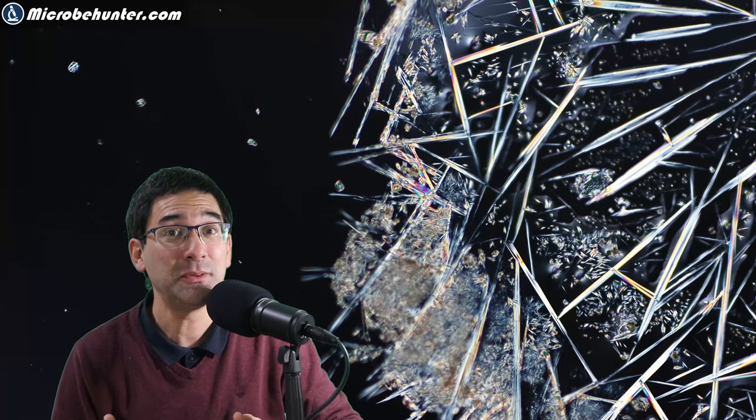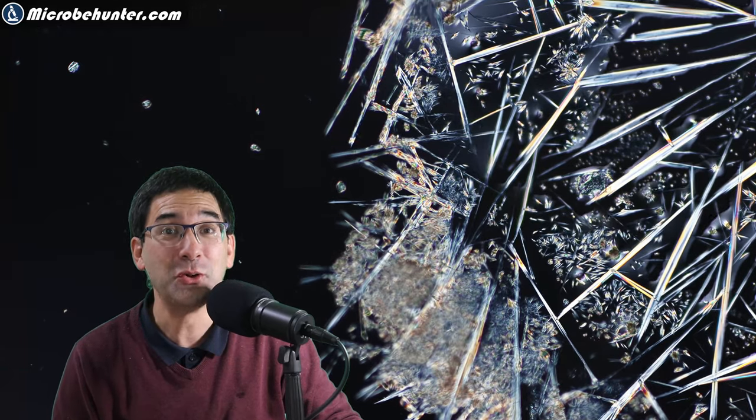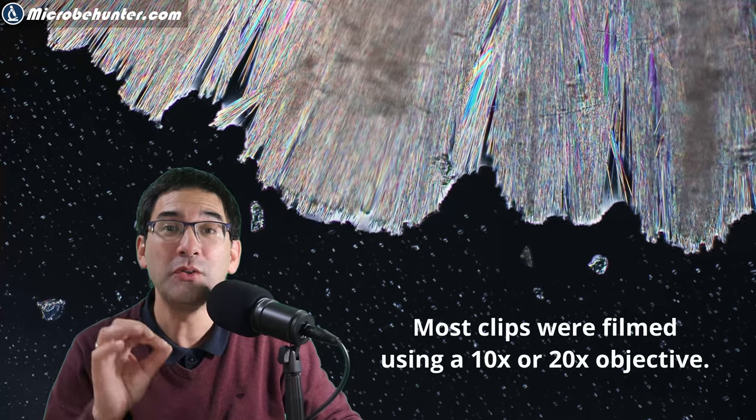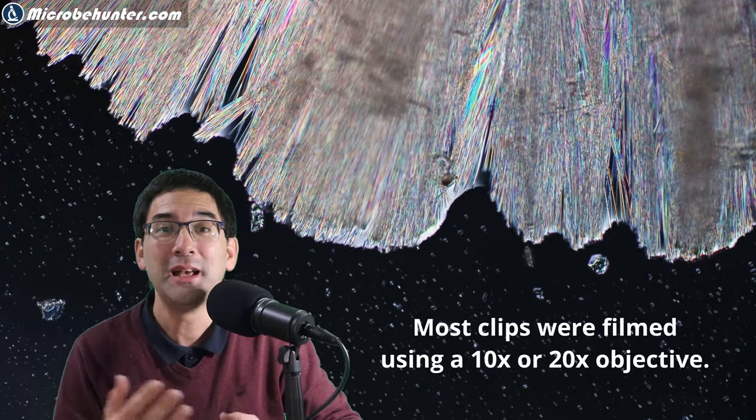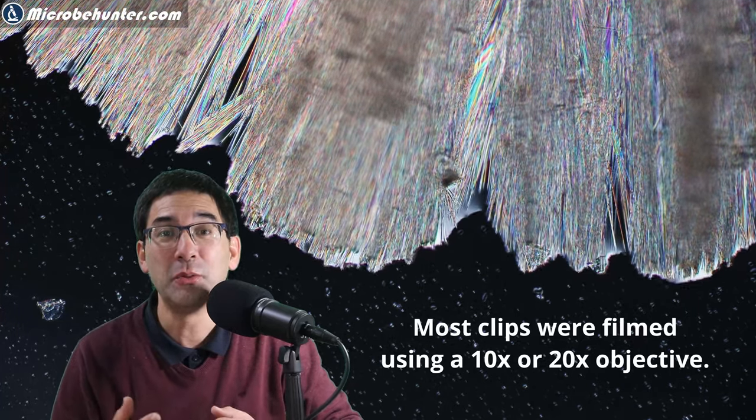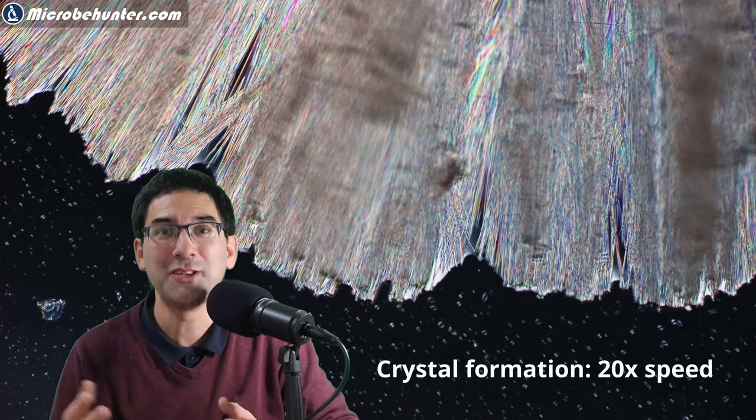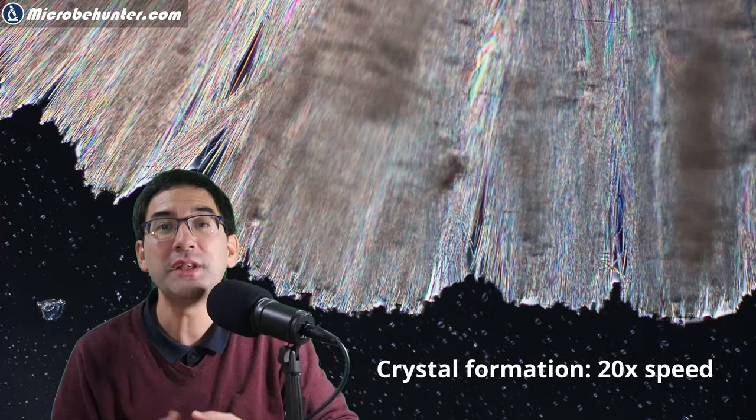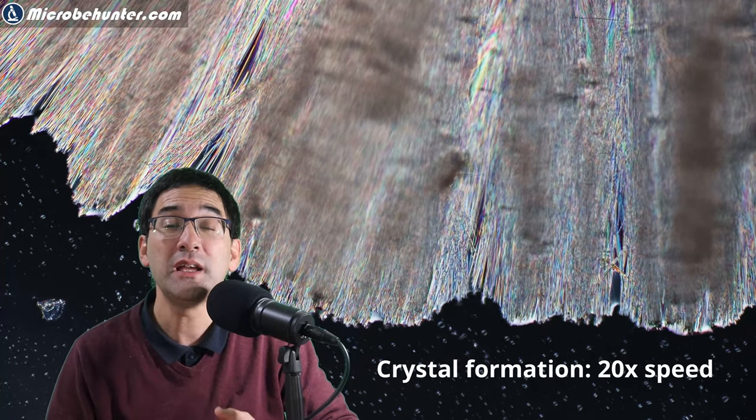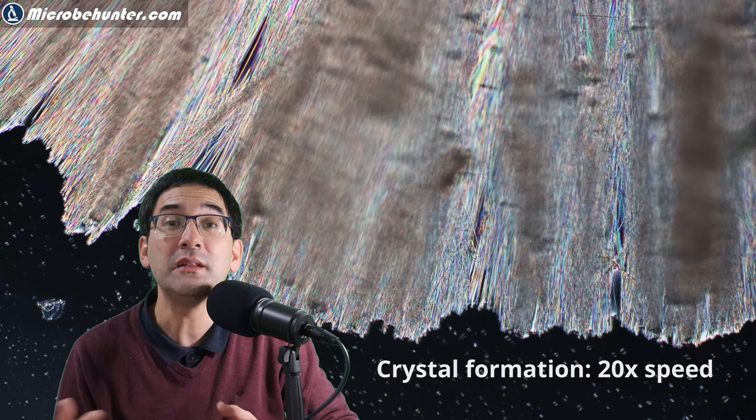One of the things that I like about caffeine under the microscope is that the crystals that form look quite different depending on the concentration of the caffeine and also where on the slide the crystals are forming. I also like to observe the growth of the crystals. In all cases, the crystal growth is shown in time lapse, usually around 20 times speed, so you're able to see how the crystals start to form.